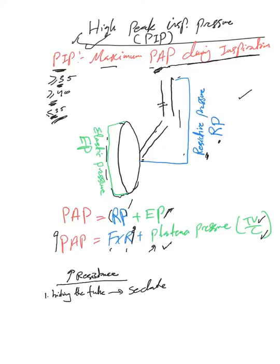The next thing that could lead to increased resistance is a lot of secretions or a mucus plug in the airways. That's why I always recommend suctioning the ET tube and the airway to make sure they are patent.